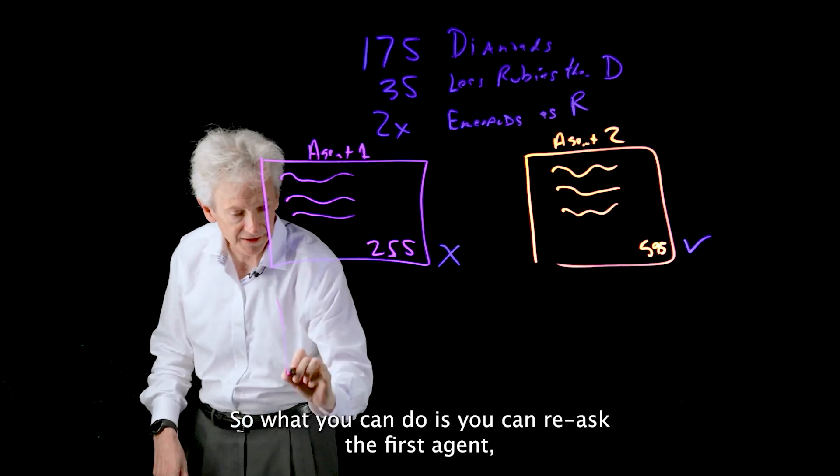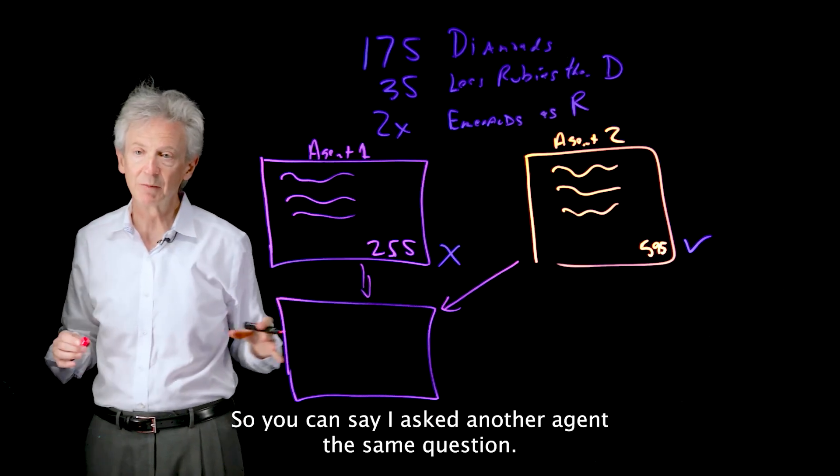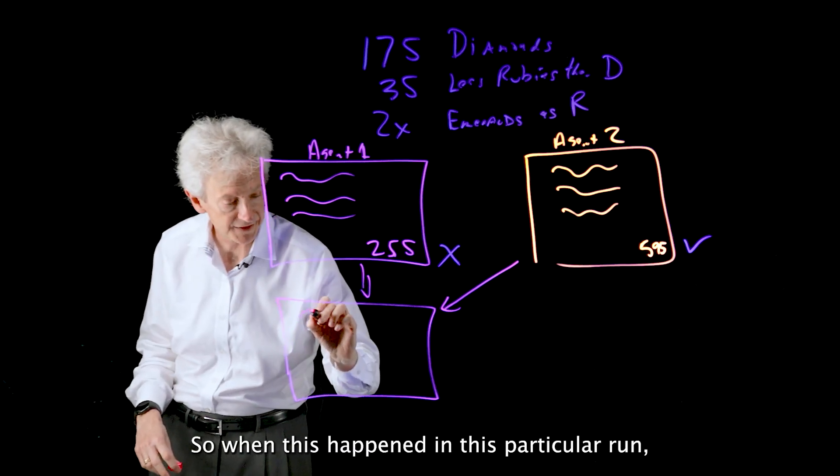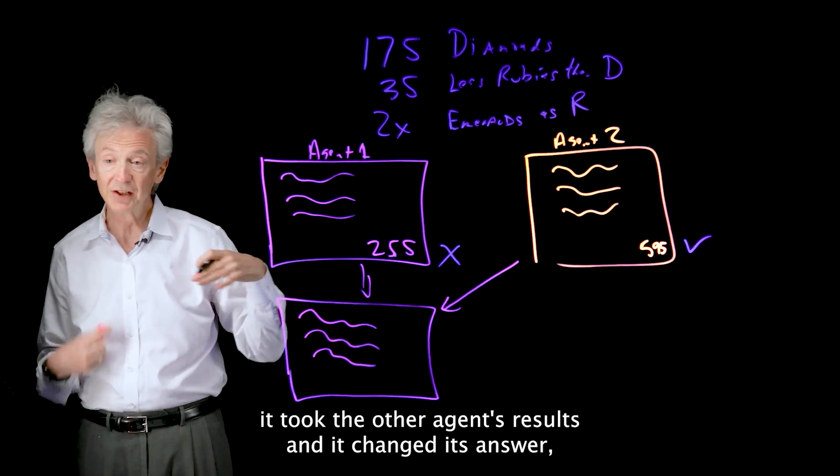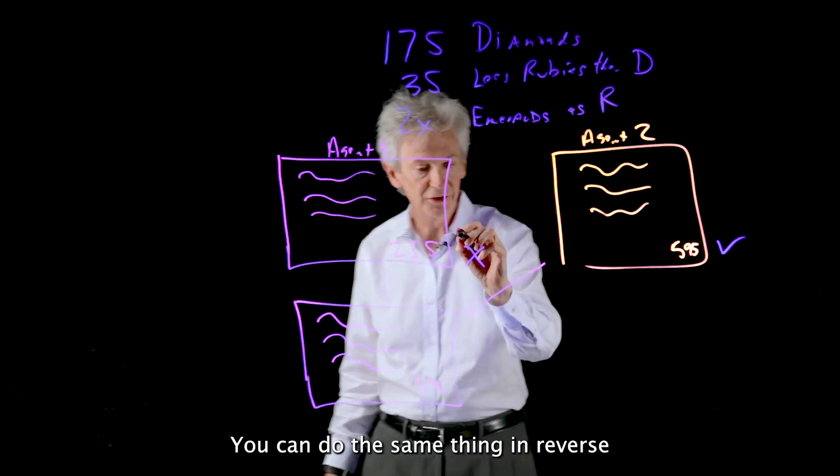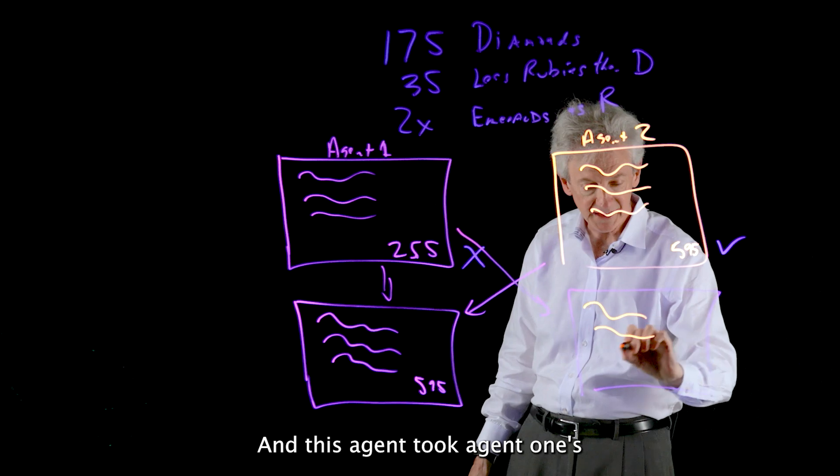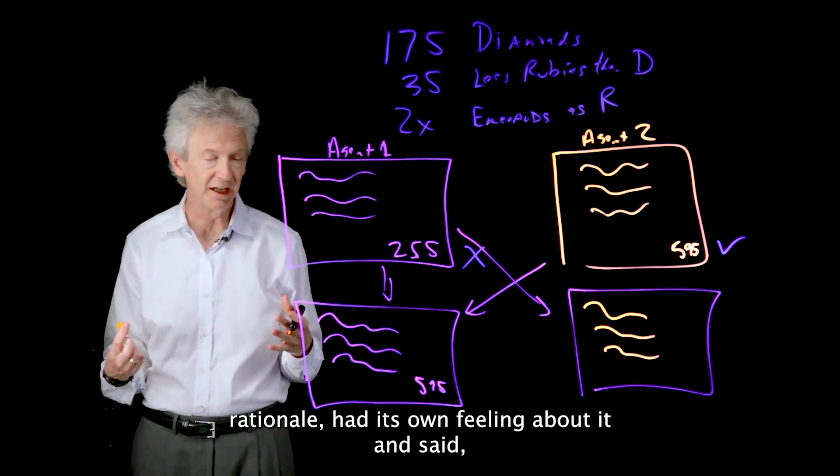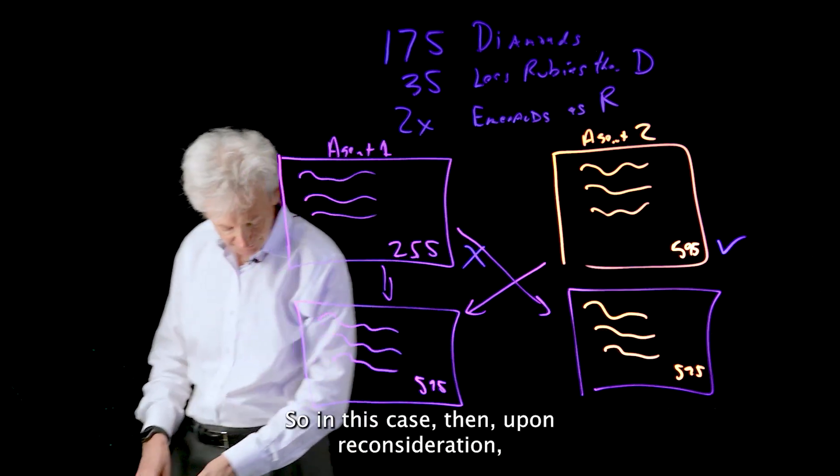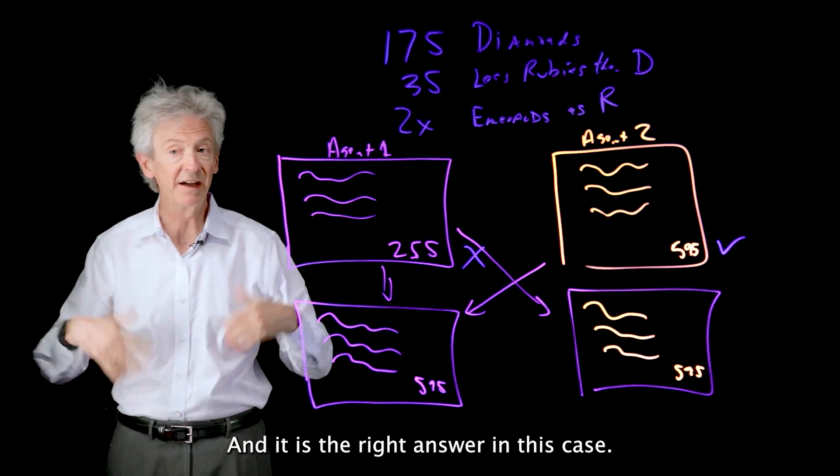But you don't know that you're asking the LLM to help solve the problem. So what you can do is you can re-ask the first agent, but give it the second agent's rationale. So you can say, I asked another agent the same question. Here was its explanation and its results. Would you like to reconsider your answer? So when this happened in this particular run, it took the other agent's results and it changed its answer. And it said, upon reconsideration, I think 595 is the right answer. You can do the same thing in reverse. And this agent took agent one's rationale, had its own feeling about it, and said, I'm sticking with 595. So in this case, upon reconsideration, getting feedback from the other agent, both agents came up with the same answer. And it is the right answer in this case.